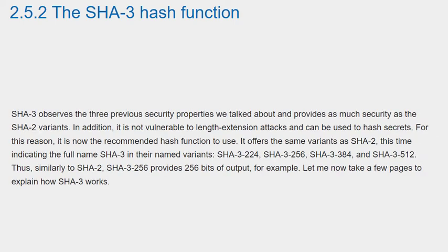SHA-3 observes the three previous security properties we talked about and provides as much security as the SHA-2 variants. In addition, it is not vulnerable to length extension attacks and can be used to hash secrets. For this reason, it is now the recommended hash function to use. It offers the same variants as SHA-2: SHA-3-224, SHA-3-256, SHA-3-384, and SHA-3-512.